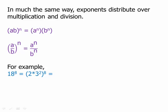We can distribute that exponent to each one of those factors. We'll get 2 to the 8th, and then we'll get (3 squared) to the 8th. For (3 squared) to the 8th, we use the power-to-a-power rule, which means multiply the exponents. And we get 2 to the 8th times 3 to the 16th. So it's very easy to go from the prime factorization of a number to the prime factorization of one of its powers.